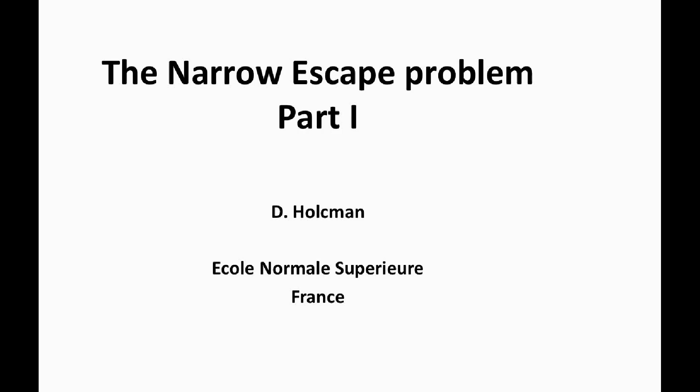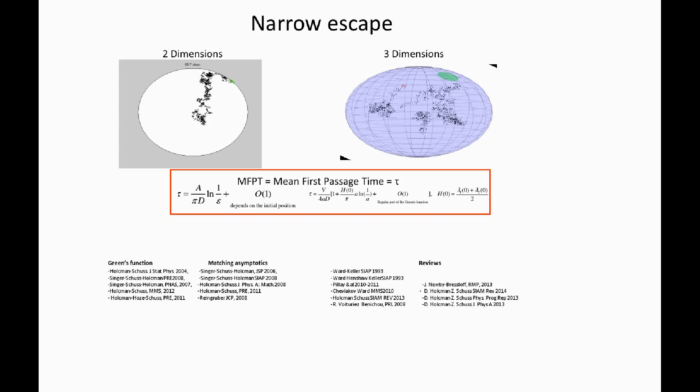Today I would like to continue with the class about the narrow escape problem. Let me explain what the narrow escape is about. We're interested in the following question: How long does it take for a Brownian particle to move inside the domain, where it can be reflected on the boundary before it reaches a small absorbing window located at this position, labeled in green, as you can see.